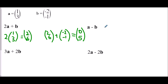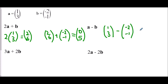For a take away b: a is one, three and we subtract b which is negative two, negative one. In the x direction: 1 take away negative 2 — subtracting a negative is the same as adding — so 1 plus 2 is 3. In the y direction: 3 take away negative 1, again double negative means adding, so 3 plus 1 is 4. The resultant vector is three, four.